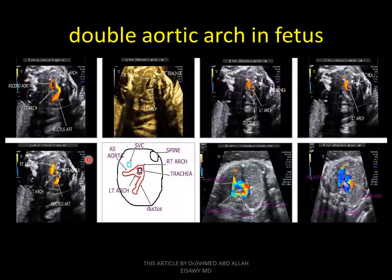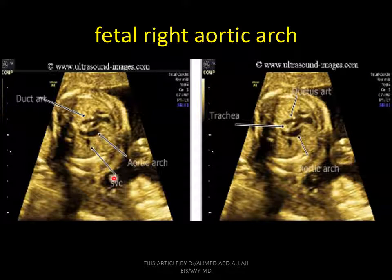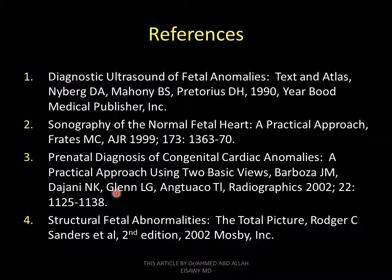Double aortic arch in fetus: as we see, it is a double aortic arch. Double aortic arch is the spine — right arch, trachea, aorta, superior vena cava, and left arch. Right-sided aortic arch in fetus: superior vena cava, ductus part, right-sided aortic arch — one of the commonest anomalies. Sometimes right-sided aortic arch is associated with other anomalies, as we see the right-sided aortic arch and trachea. Thank you to all references.